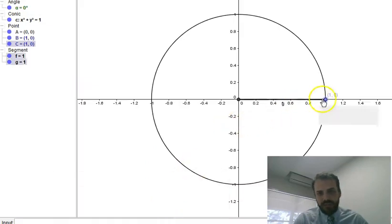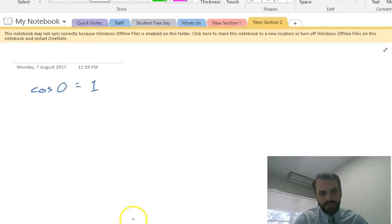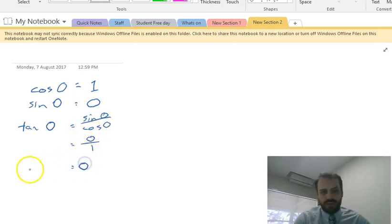And if we go back to there, we can see that sine theta equals zero. Sine zero, so sine of zero degrees equals zero. And finally, we can say that tan of zero degrees equals sine zero over cosine zero, which equals zero over one. And zero divided by one is zero. So tan of zero equals zero.